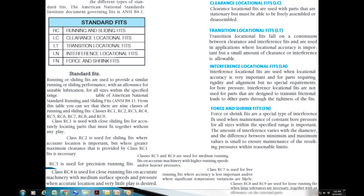The first class, RC1, is used with a close sliding fit for accurately locating parts that must fit together without play. RC2 is used for sliding fits where accurate location is important but where greater maximum clearance than provided by RC1 is necessary. As you continue down the list, classes RC8 and RC9 are used for loose running fits with large tolerances.